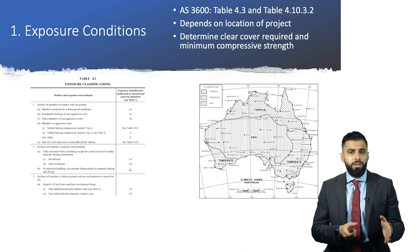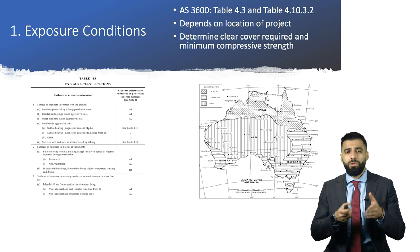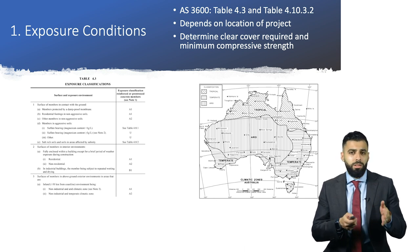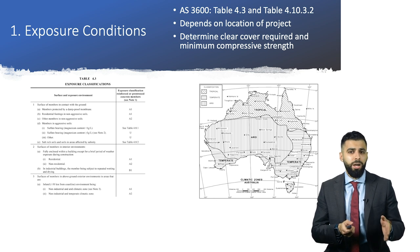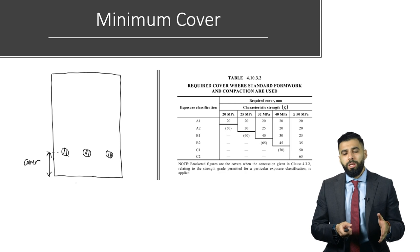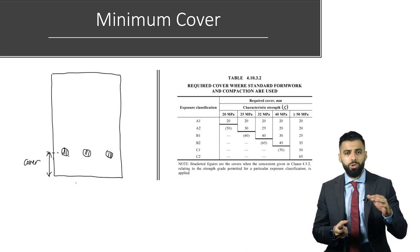The first step in the design process is looking at exposure conditions — where the structure is actually located. You refer to AS3600 Table 4.3, which gives you locations in accordance with a map. Depending on that location, you obtain the minimum cover required for your concrete element from Table 4.10.3.2 in AS3600, as well as the minimum compressive strength of your concrete section. The minimum cover is the distance between the surface of the embedded steel and the surface of the concrete.